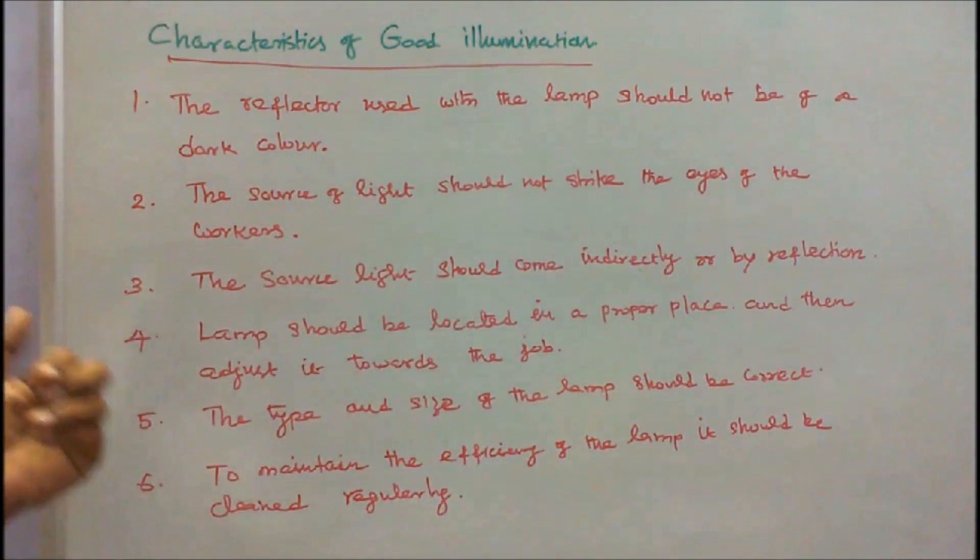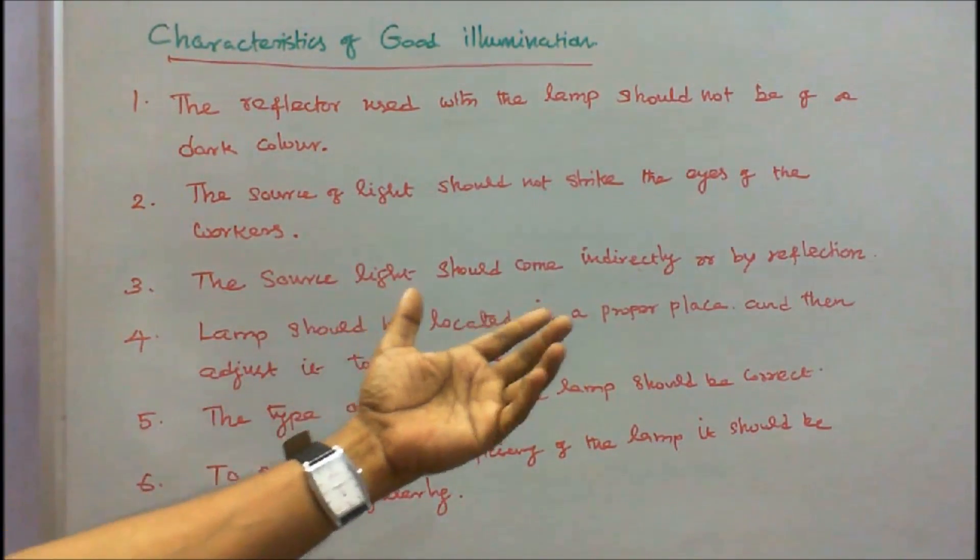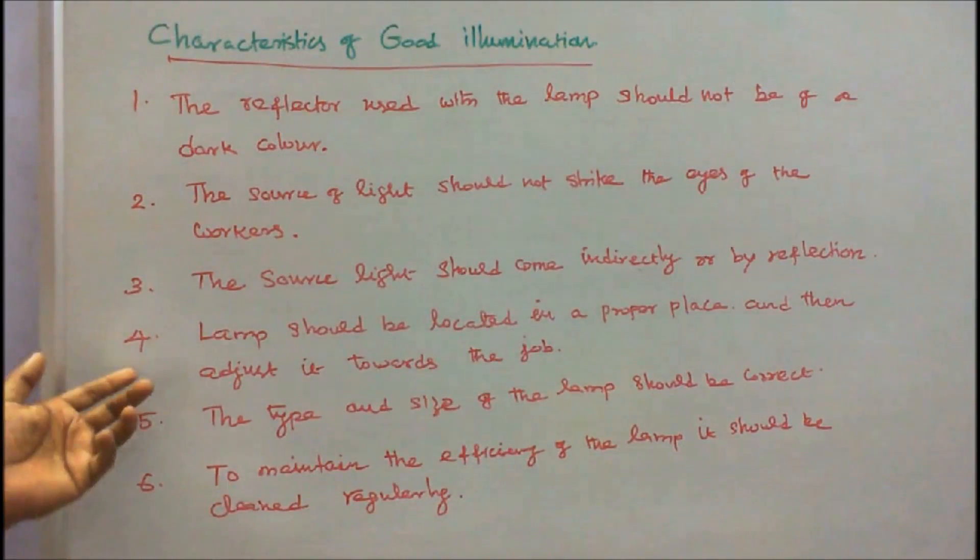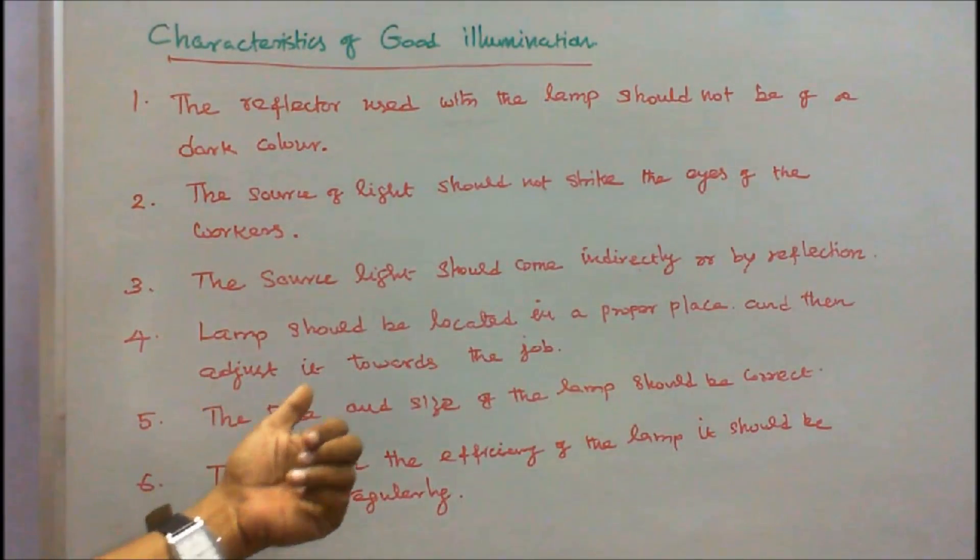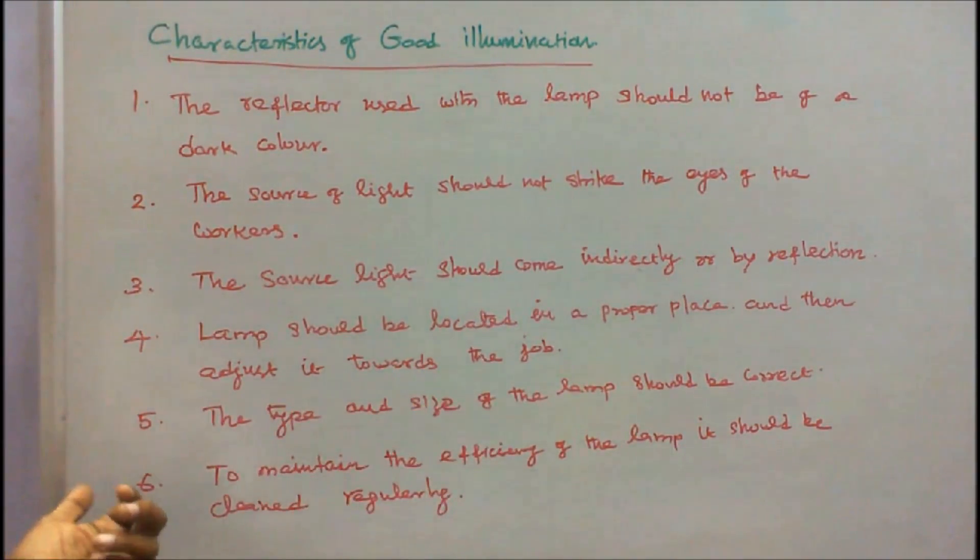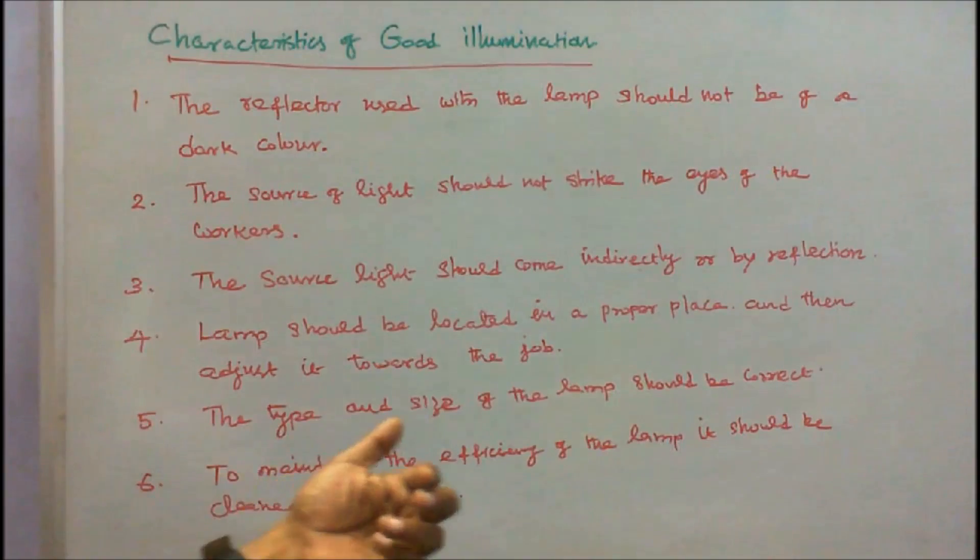Number three, the source of light should come indirectly or by reflection. Number four, lamps should be located in a proper place and then adjusted towards the job. Number five, the type and size of the lamp should be correct.